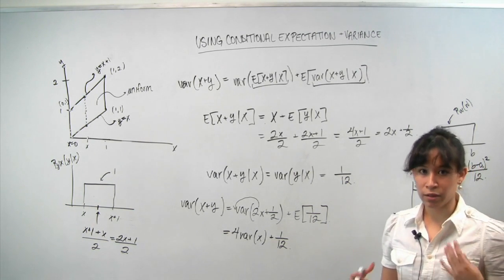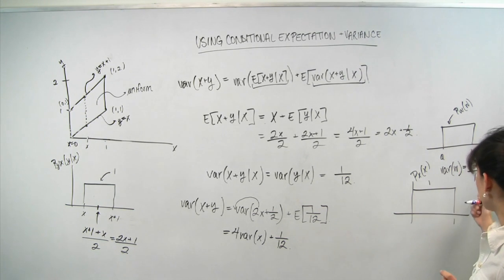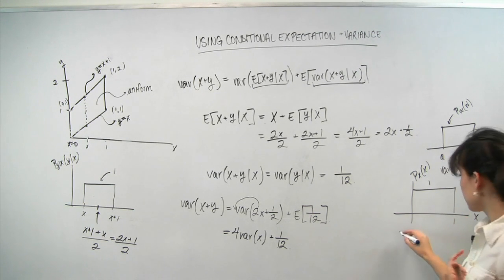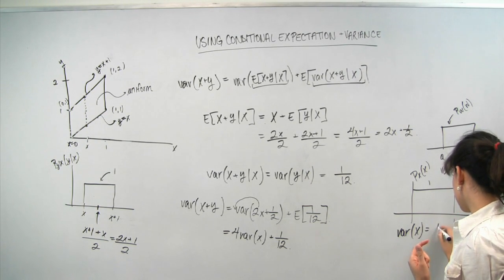We're home free because we can apply this formula, b minus a squared over 12 gives us the variance. So b is 1, a is 0, which gives variance of x is equal to 1 12.